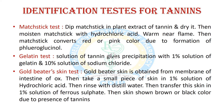The second test is the gelatin test. In this test, a solution of tannins gives precipitation with 1% solution of gelatin and 10% solution of sodium chloride. The third test is the gold beater skin test, which is very important for identification of tannins. Gold beater skin is obtained from the membrane of the intestine of an ox. A small piece of skin is placed in 1% hydrochloric acid solution, rinsed with distilled water, then transferred into 1% ferrous sulphate solution. The skin shows brown or black color due to the presence of tannins.